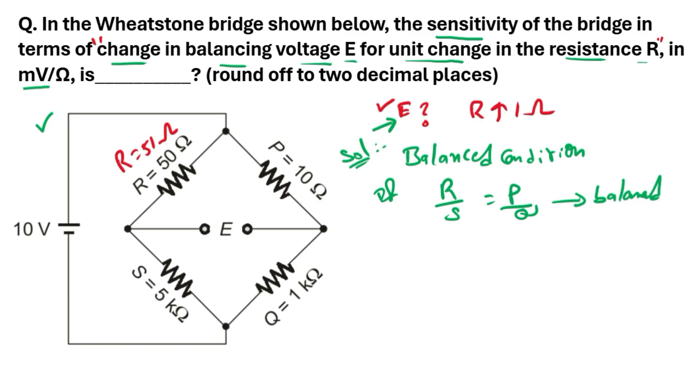In the bridge, they already given R value, S value, P value, Q value. Just substitute here. They given R, that is 50 ohms, S already given 5 kilo ohm, 5 kilo ohm means 5000.